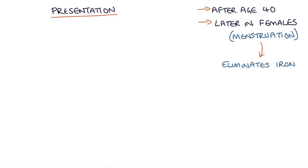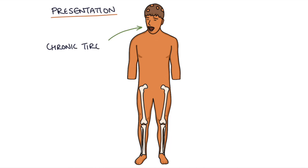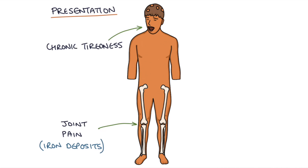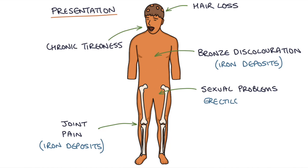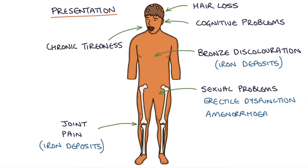Symptoms include chronic tiredness, joint pain because of iron deposits in the joints causing arthritis, pigmentation or a bronze discoloration of the skin due to iron deposits, hair loss, sexual problems such as erectile dysfunction or amenorrhea, and cognitive problems like issues with memory and mood disturbance.